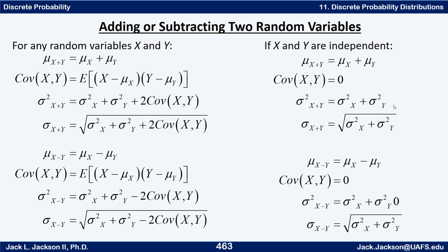Whether you're adding or subtracting x and y, the variances add together in the independent case. So the variance of x minus y equals variance of x plus variance of y — whether you add or subtract the variables, the variances always sum.